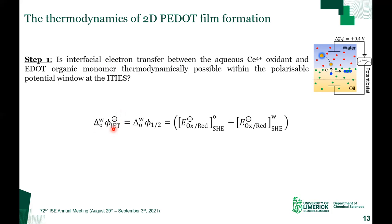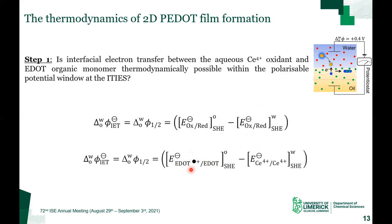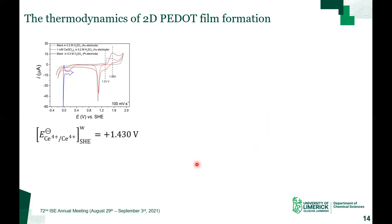This equilibrium potential is assumed to be the half-wave potential of the reversible redox process and may be determined from the standard redox potentials of the aqueous and organic redox species in either phase. The aqueous redox couple in our case is the cerium oxidant and the organic redox couple is the EDOT monomer and its radical cation. Using a polycrystalline gold electrode in a three-electrode configuration, we determined the redox potential of the aqueous cerium oxidant to be plus 1.43 volts versus the standard hydrogen electrode, in agreement with literature values.